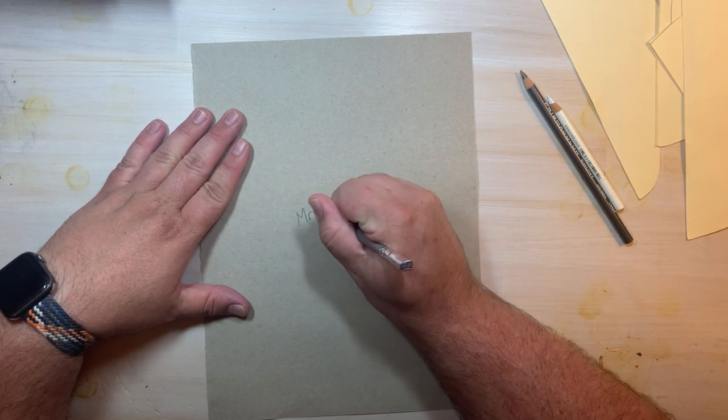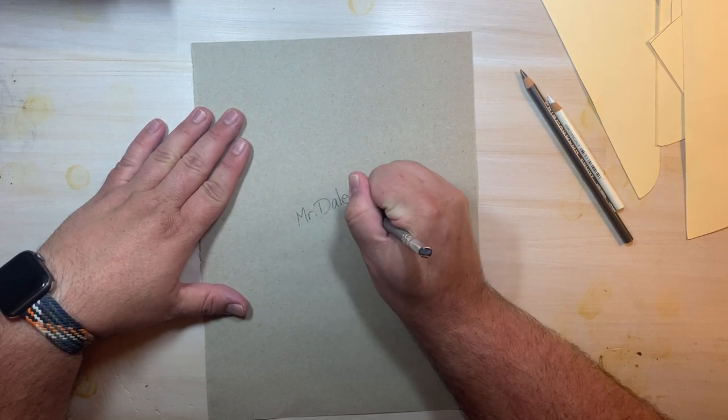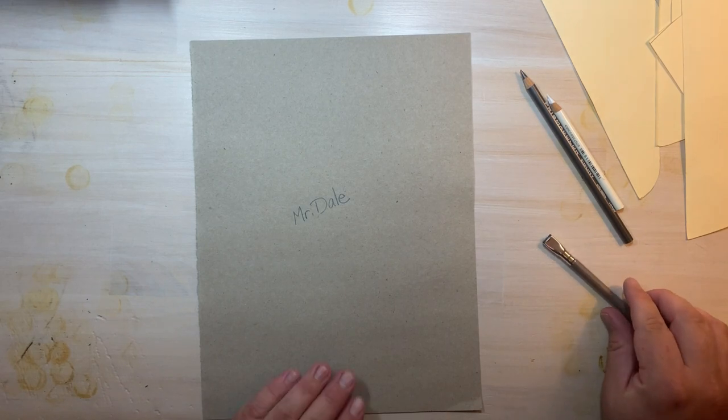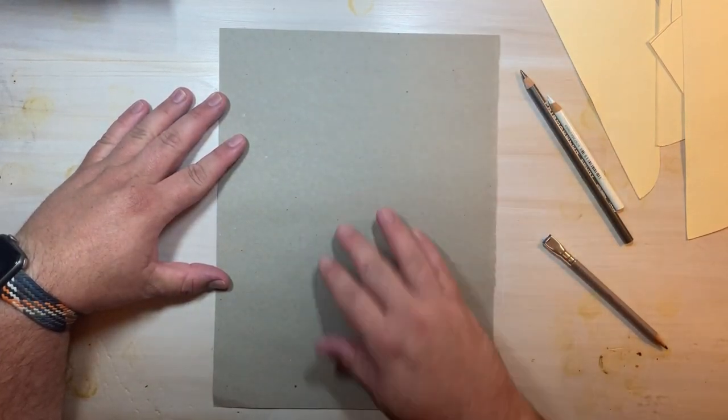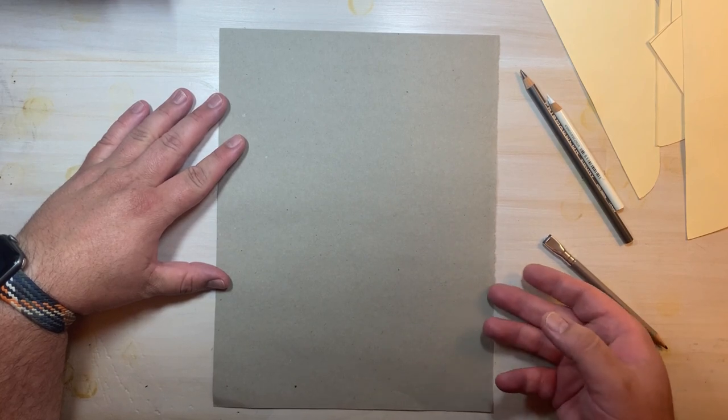The very first thing I will do is write my name on the back of my paper. I want to make sure my paper is vertical, tall instead of wide, and I'll flip it over to the clean side.